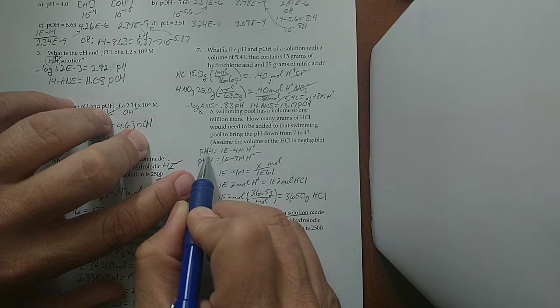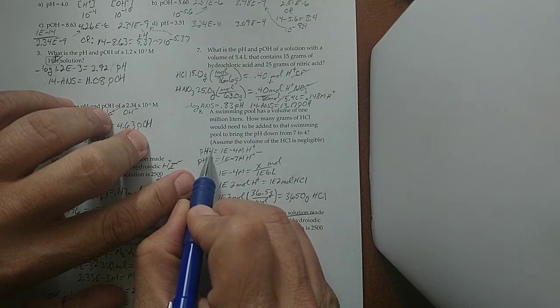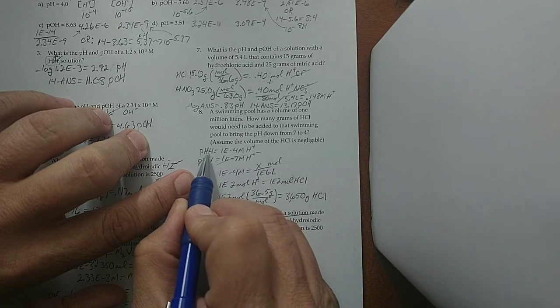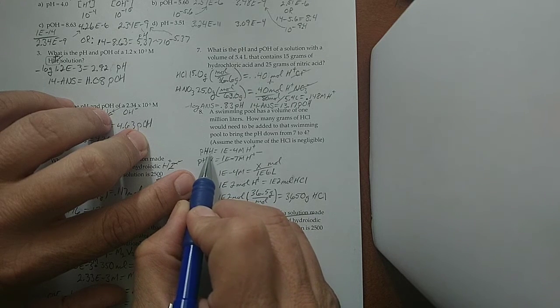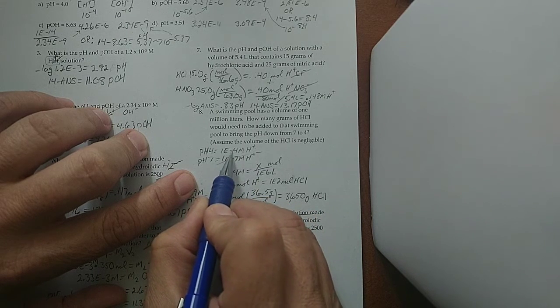If the pH is going to be 4, what is the molarity going to be? It's going to be using the 4 as the exponent on 10, except, remember, the sign is wrong, so we'll put the negative back, and if the pH is 4, the molarity of H⁺ is 1 × 10⁻⁴.